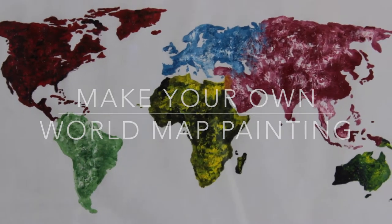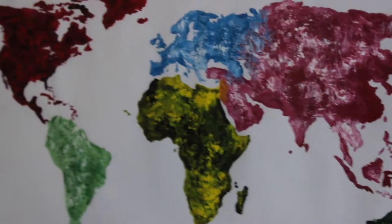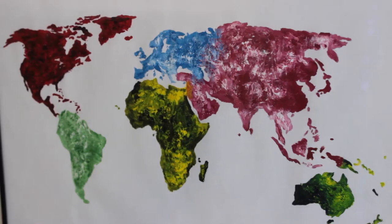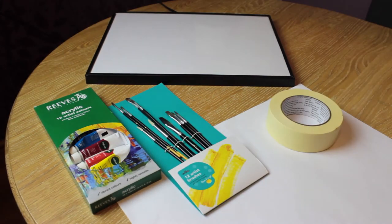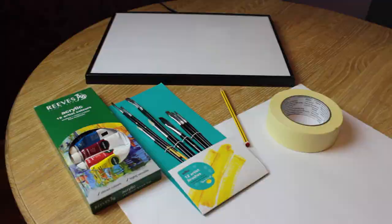Hi everyone, today I'm going to show you how to make this homemade world map painting which you may have seen in my latest video. What you're going to need for this is an empty photo frame, some A5 paper, acrylic paints and paintbrushes, masking tape, and a very sharp pencil.